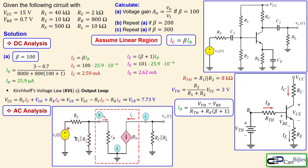Now the AC analysis. For this we need the small signal model. The bypass capacitor CE shorts out RE, and the coupling capacitors are also shorted. VCC is AC ground, so from the collector node we see RC and RL in parallel. At the base node, R1 and R2 both go to AC ground and are in parallel. RS connects to VI. The red box shows the BJT small signal model, where Rpi is the dynamic resistor and the dependent current source depends on IB and beta.